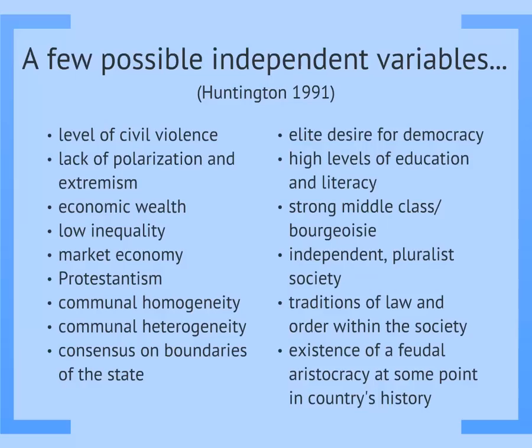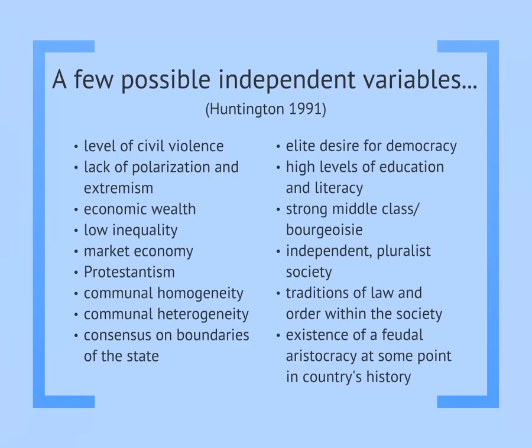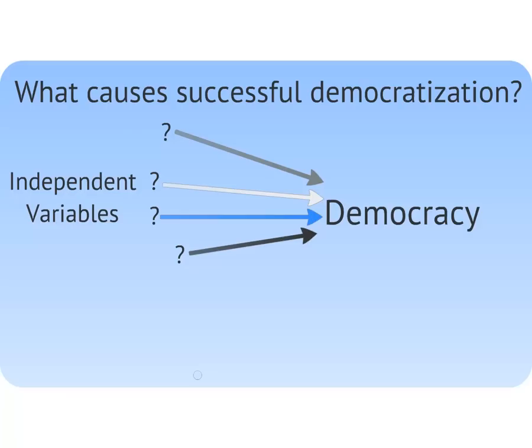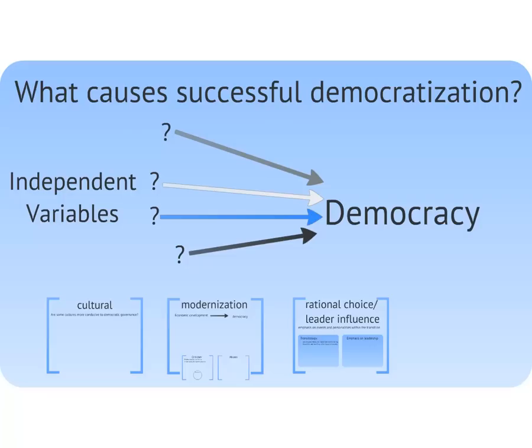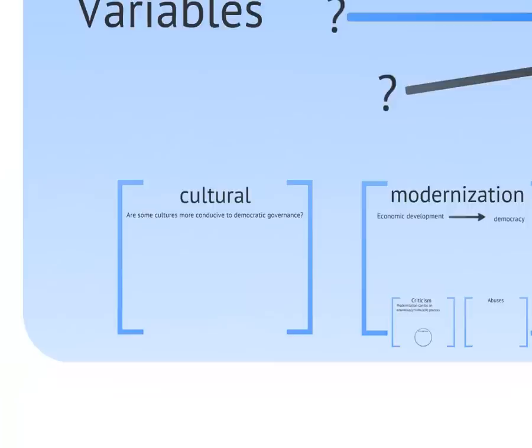Some of the variables are blatantly contradictory — both very diverse or heterogeneous societies and not-so-diverse or homogeneous societies can be said to contribute to democratization. We're just going to look at four really broad potential approaches to explaining democratization: cultural influence, modernization, rational choice or leadership-centered approaches, and the emphasis on international influence.